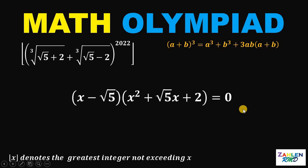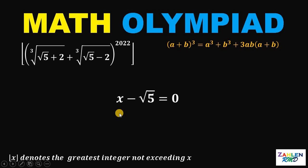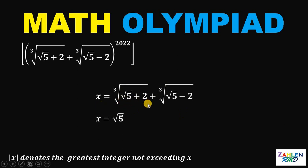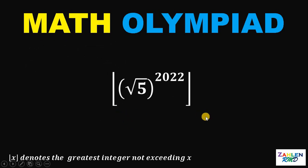Since this equals zero, at least one factor must equal zero. Using the discriminant on the quadratic factor x² + √5·x + 2, we find it yields no real values for x. Since our original expression is a real number, the only valid factor is x − √5 = 0, giving x = √5. Since x equals the expression inside the parentheses, we can replace it with √5. Our question now becomes: what are the last three digits of the floor of (√5)^2022 = 5^1011?